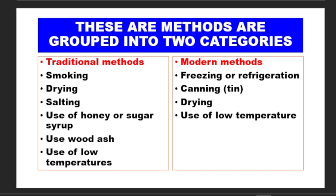These are the methods grouped into two categories that we use in preserving various types of food: the traditional method and the modern method. Under traditional we have smoking, drying, using sun, salting, using honey or sugar, use of wood ash, and use of low temperature.